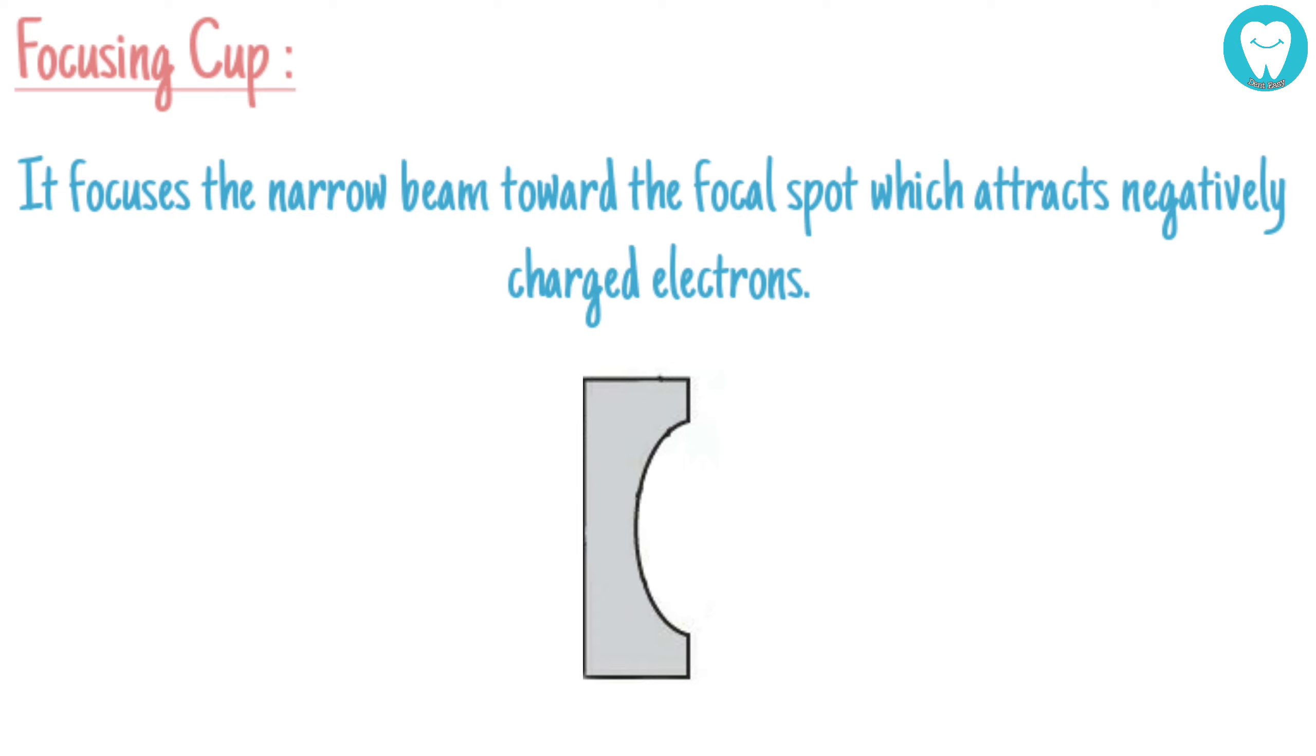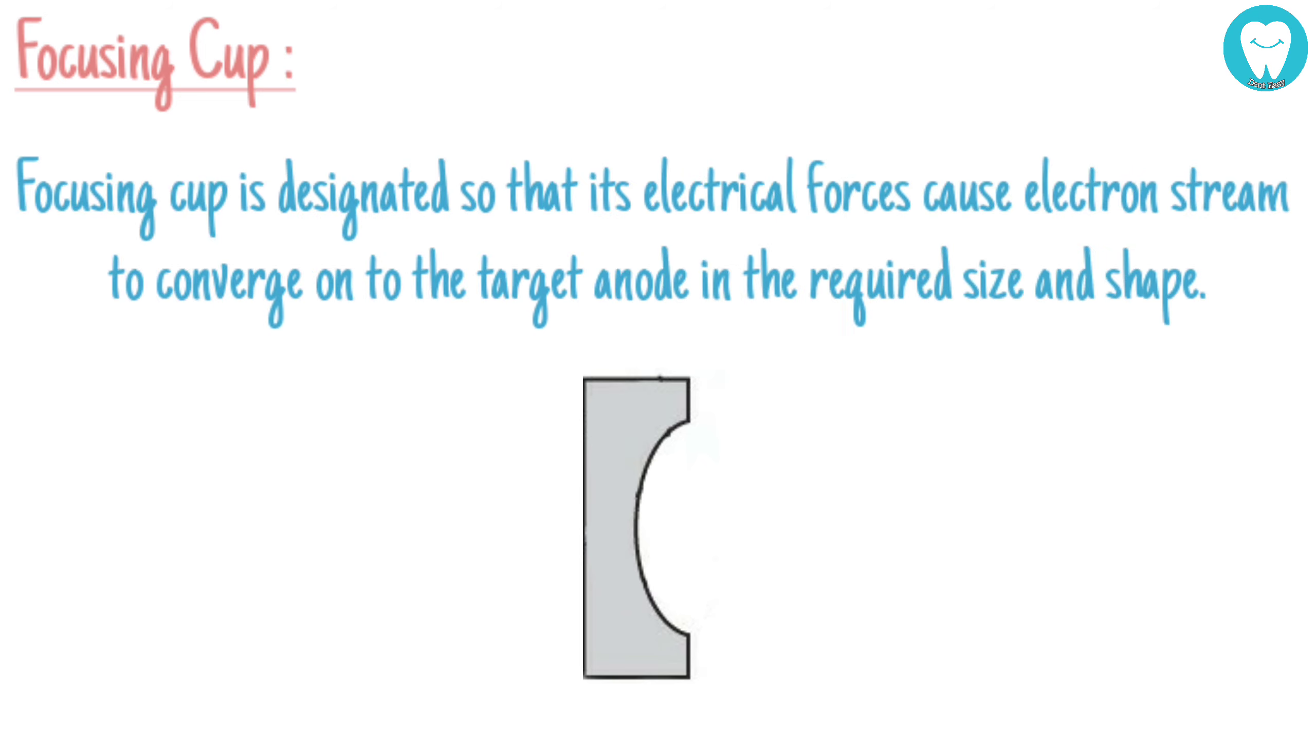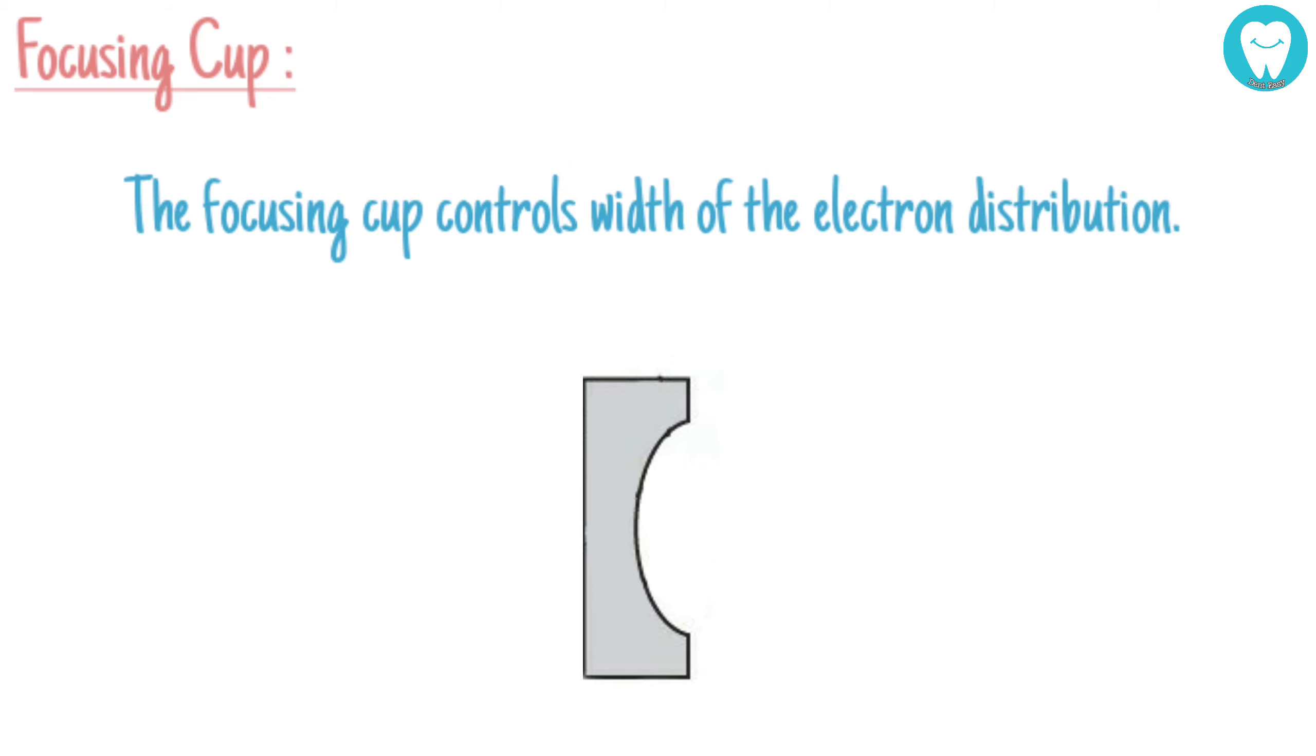The focusing cup is designed so that its electrical forces cause the electron stream to converge onto the target anode in the required size and shape. The focusing cup controls the width of the electron distribution.